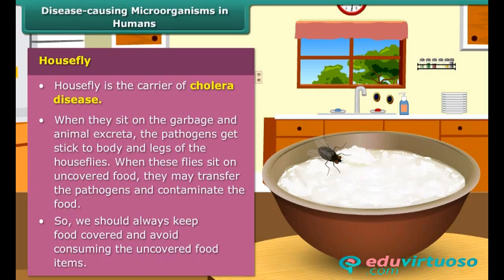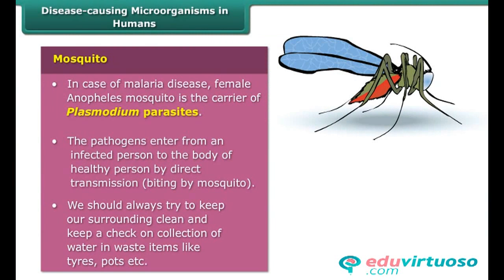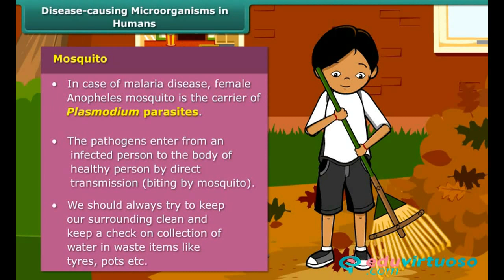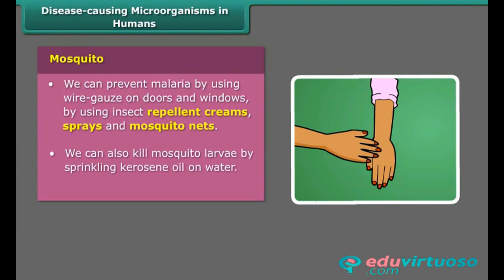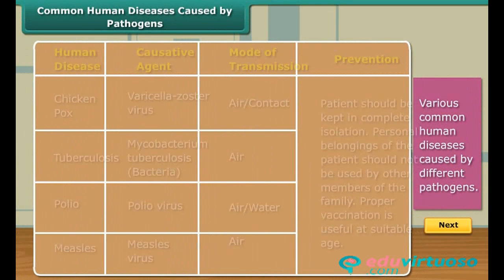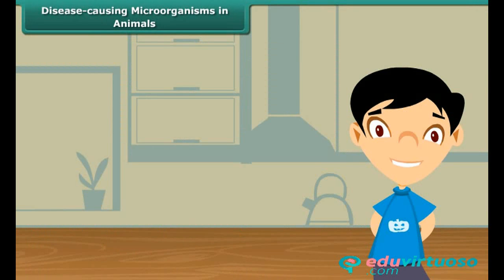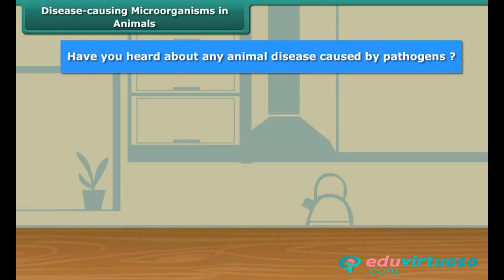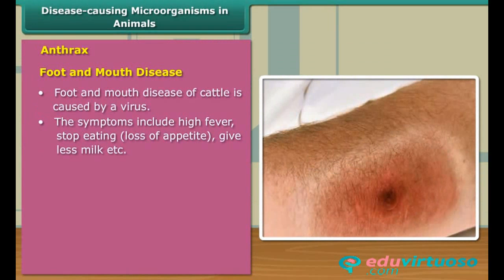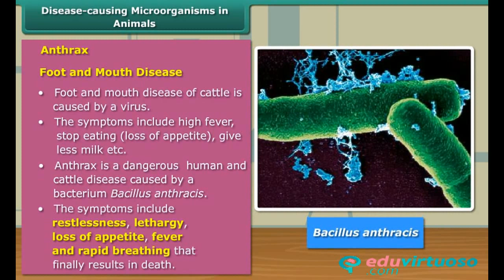To prevent cholera, we should always keep food covered and avoid consuming uncovered food items. In malaria disease, the female Anopheles mosquito is the carrier of Plasmodium parasites. We should use repellent creams, sprays and mosquito nets to prevent malaria. Here is a list describing various common human diseases caused by different pathogens. Anthrax and foot and mouth diseases are common examples of animal diseases. Anthrax is a bacterial disease caused by Bacillus anthracis, while foot and mouth disease in cattle is caused by a virus.